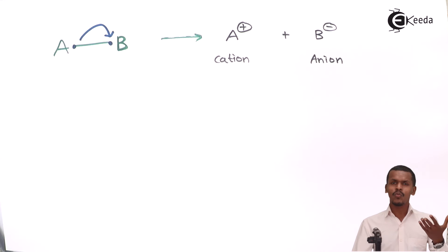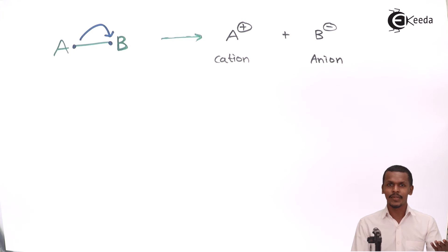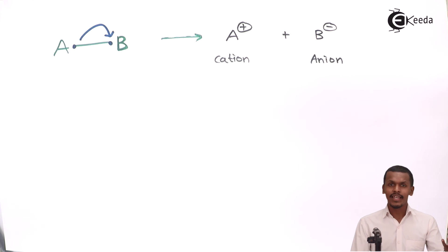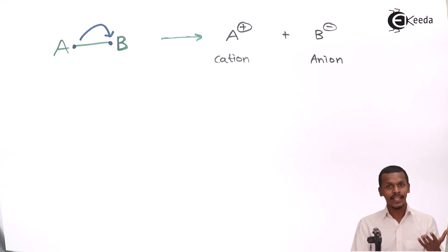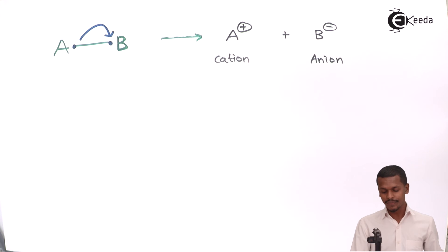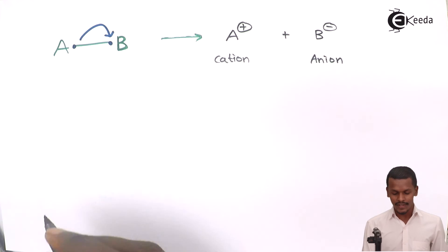As we know, like dissolves like. That is why using a non-polar solvent gives homolytic fission, while choosing a polar solvent gives heterolytic fission. Let me introduce another example to clarify this.